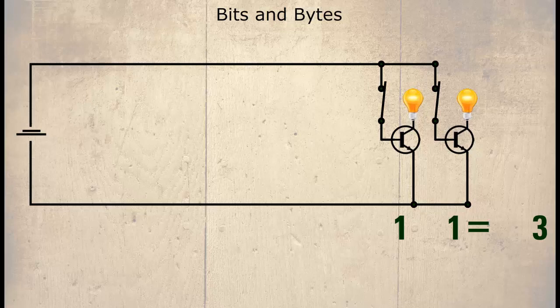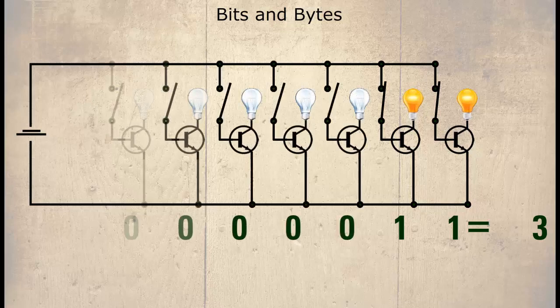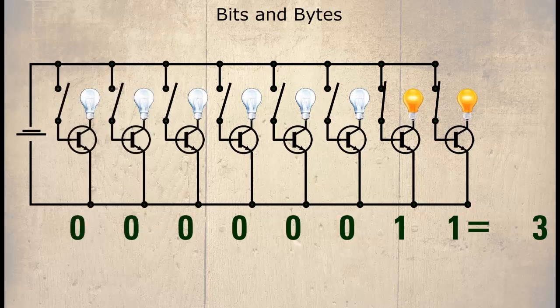So in effect, with the first example with one transistor we had two states: zero and one. In the second we had four states: zero, one, two and three. Let's increase this to eight transistors. With all the transistors off we could say 00000000 — this is binary.